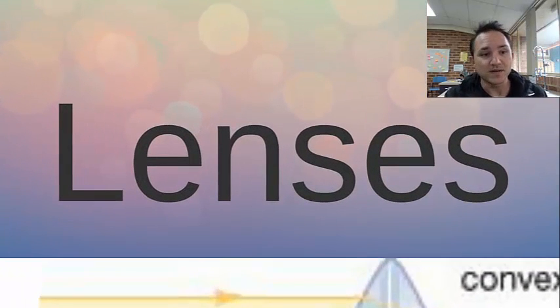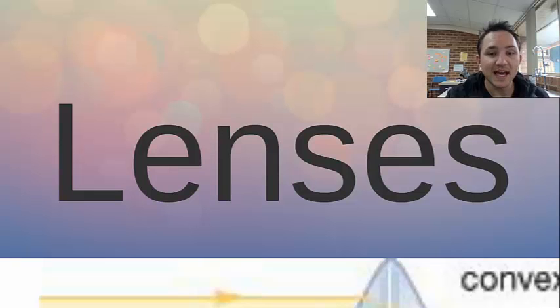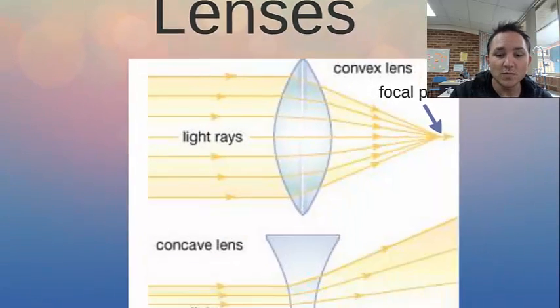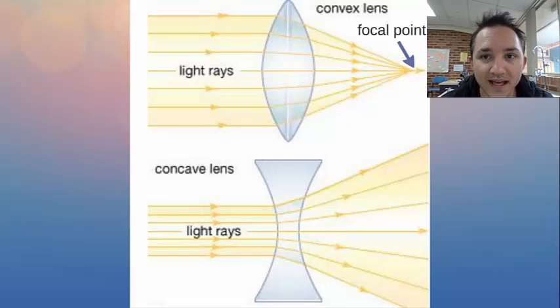Lenses are made of glass with different refractive indexes, and that's how they actually focus or scatter light. Now, there are two main types of lenses, one of them being a convex lens, which is the one at the top there, and the bottom one being a concave lens.